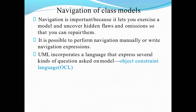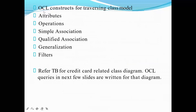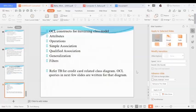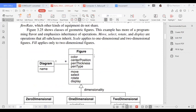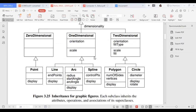Navigation of class models refers to how you navigate manually or by writing expressions from one model to another. This uses the Object Constraint Language, and you need attributes, operations, simple associations, qualified associations, generalizations, and filters. We will look at a class diagram example to understand these concepts.